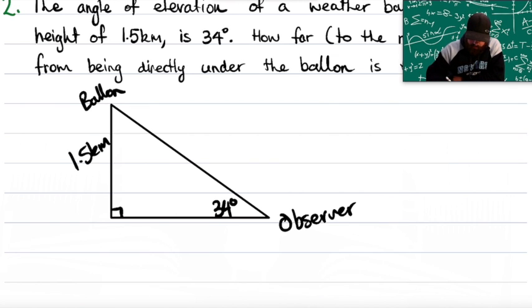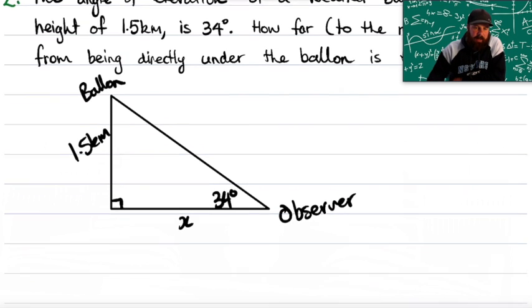So we're going to say 34 degrees is down here. And the question asks, if the observer's here, how far away are they from being right underneath the balloon over here? So we're asked to find this value here.